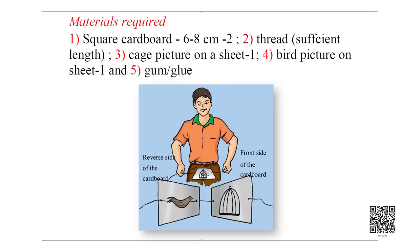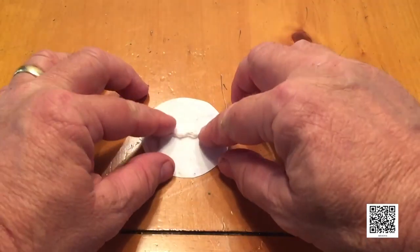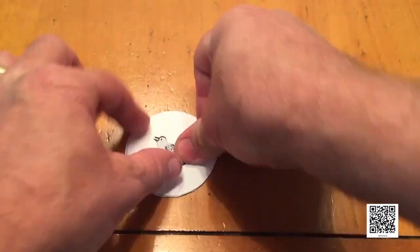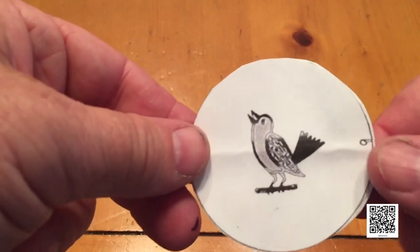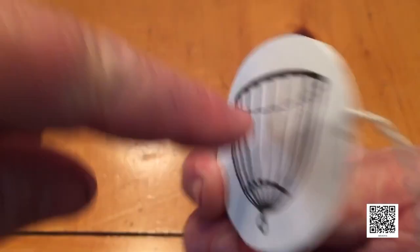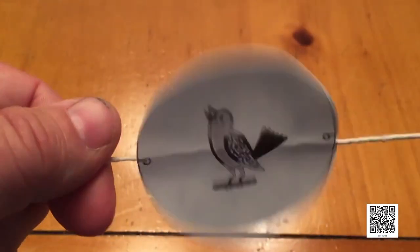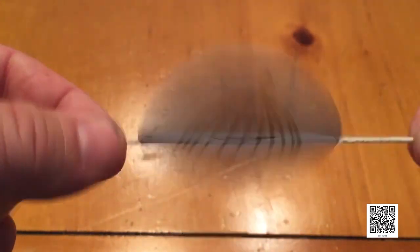Let us make a movie of our own. Materials required: a square cardboard of six or eight centimeters, thread of sufficient length, a picture of a cage on one side, and a picture of a bird on the other side, plus gum or glue. Make two holes in the cardboard, thread a string through the holes, draw or paste a cage on one side and a bird on the other, then twist the string and make the card twirl rapidly. You will see the bird appear inside the cage — like magic!